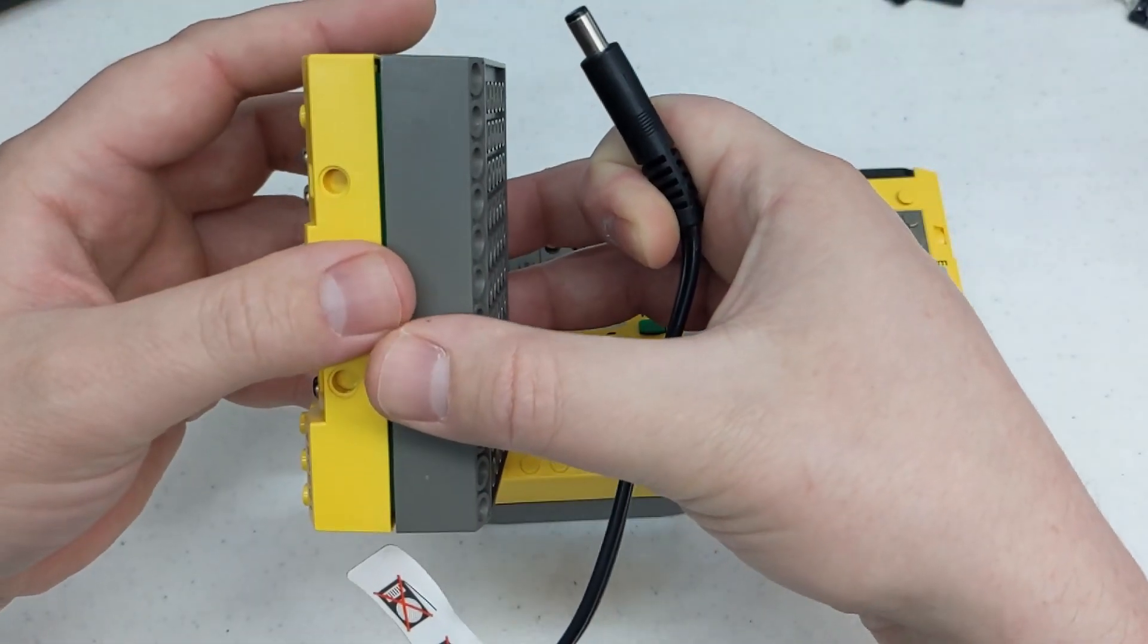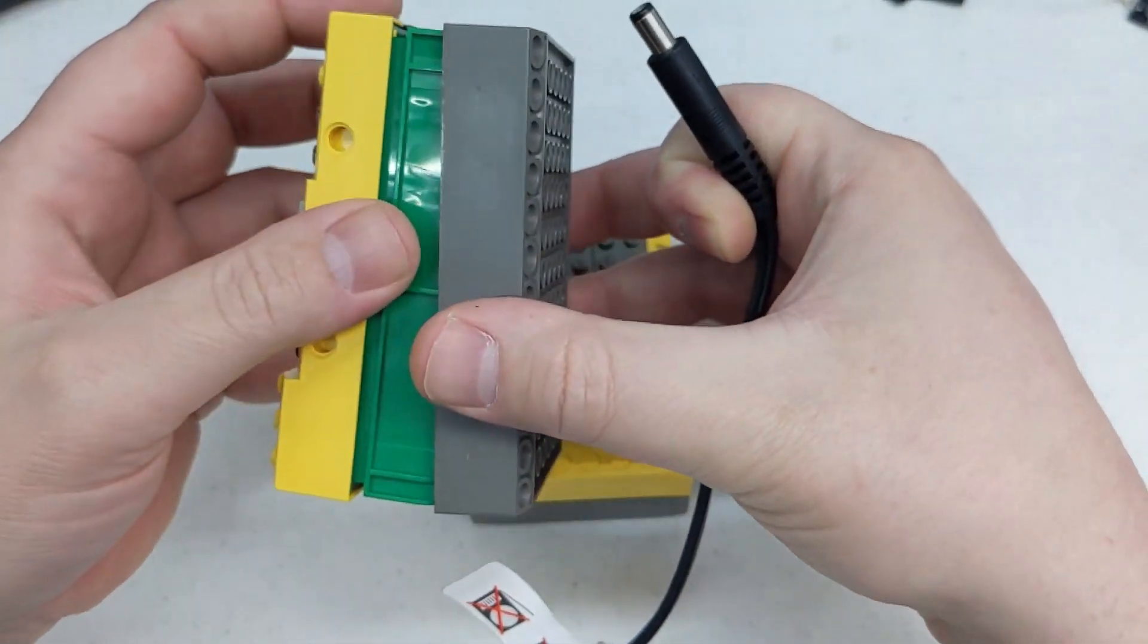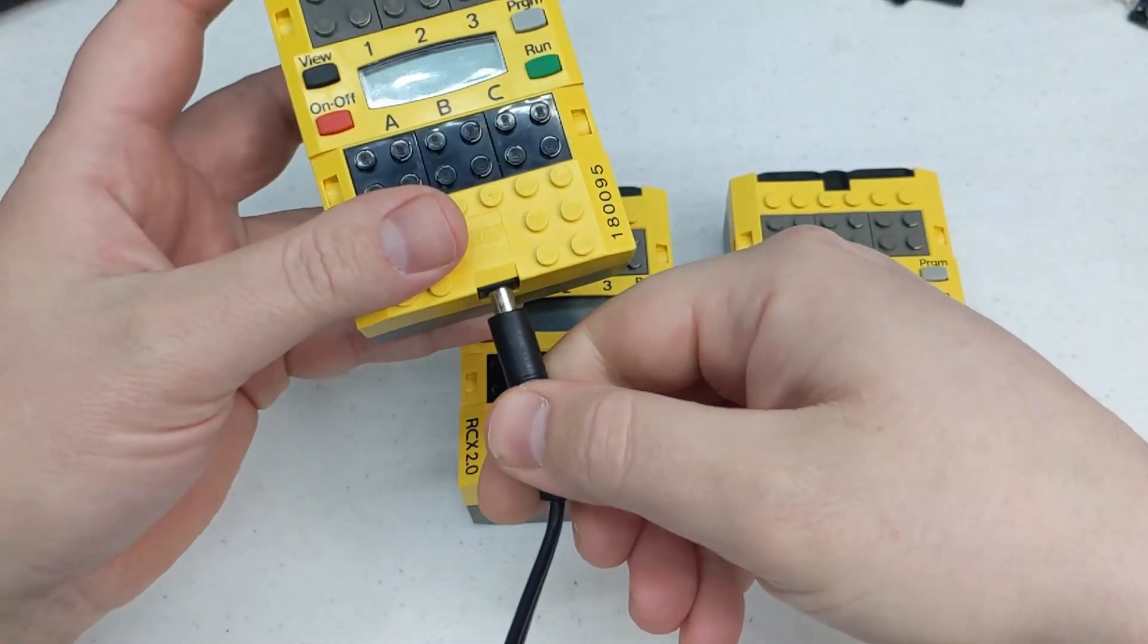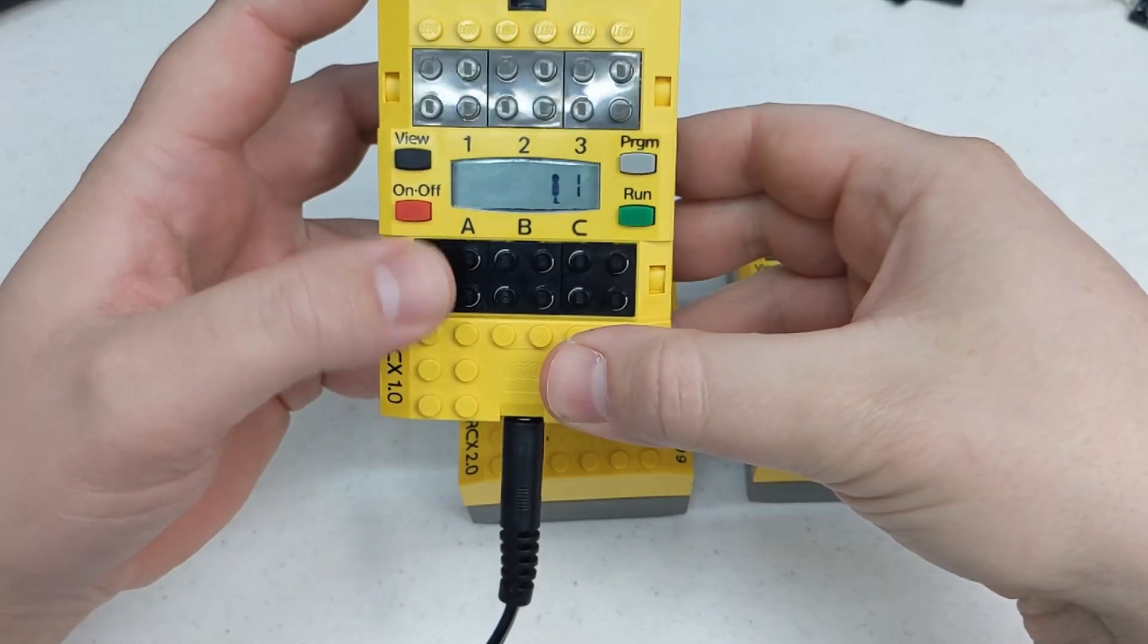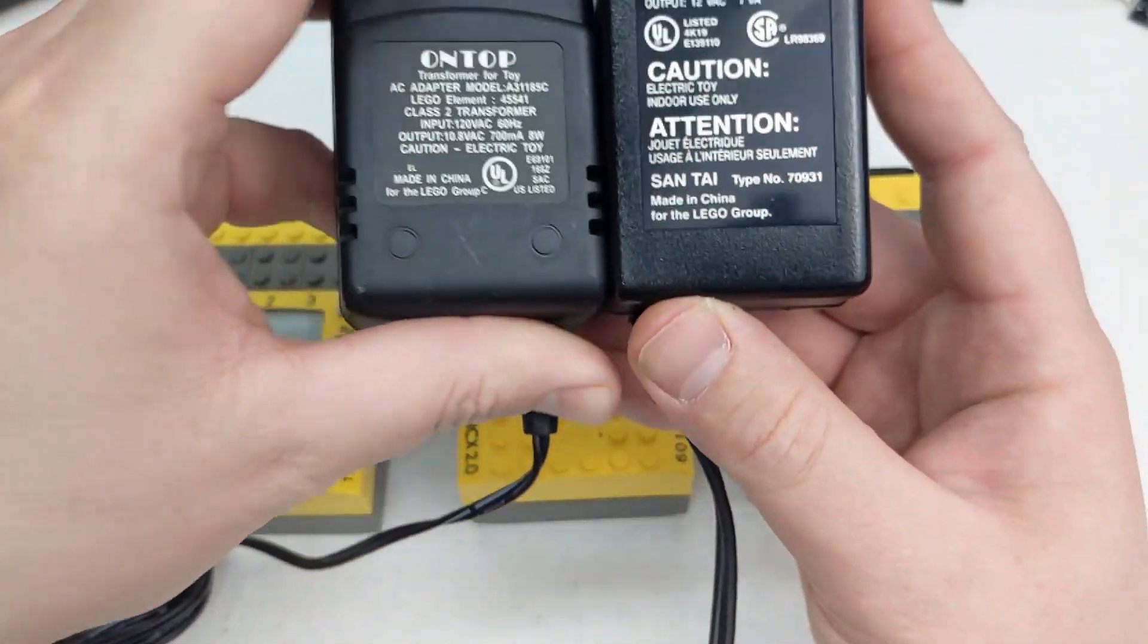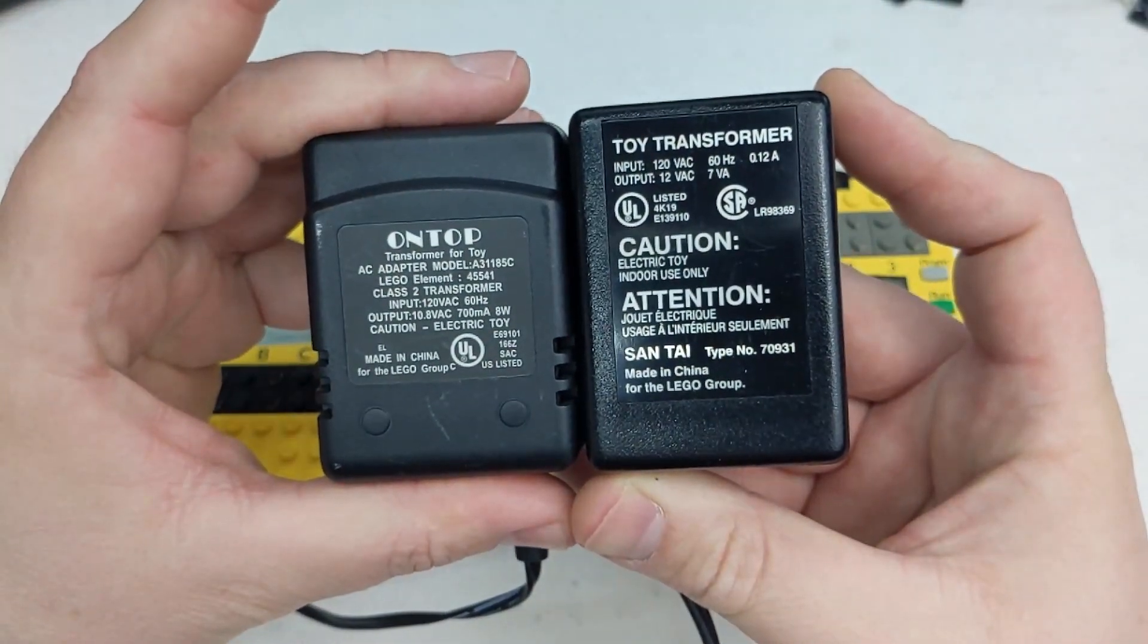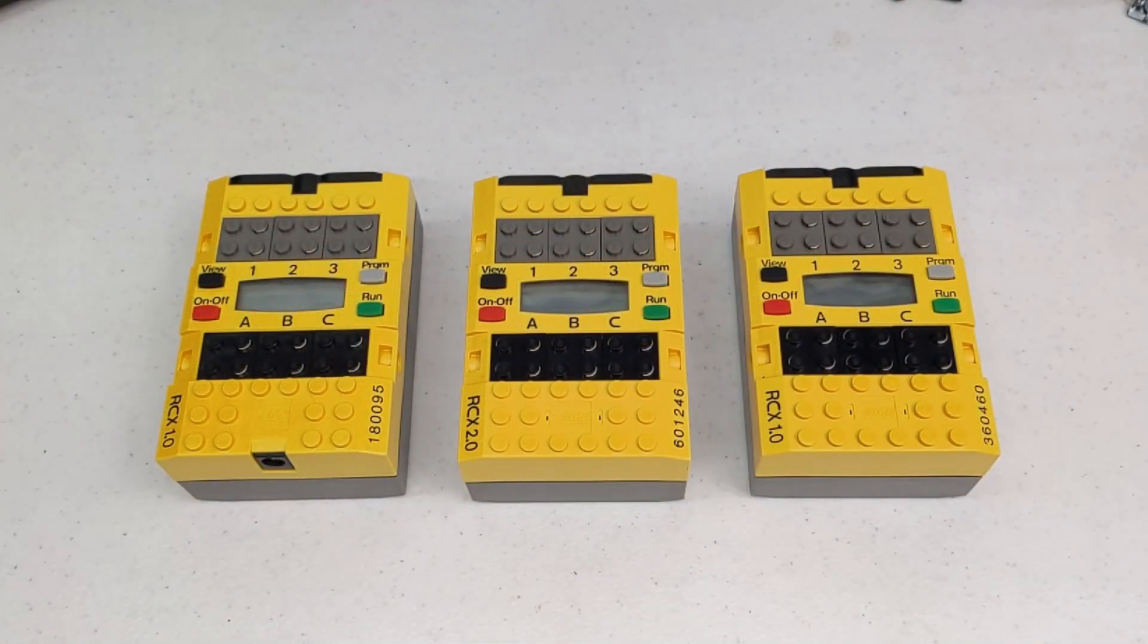If the RCX has an external power jack, try powering the unit without batteries installed, using a 9 to 12 volt AC transformer such as the ones sold with LEGO products like the 9 volt train speed regulator. I'll go into more detail on why I like to use these specifically. Next, I would recommend downloading a firmware to the unit and test the IR communication.